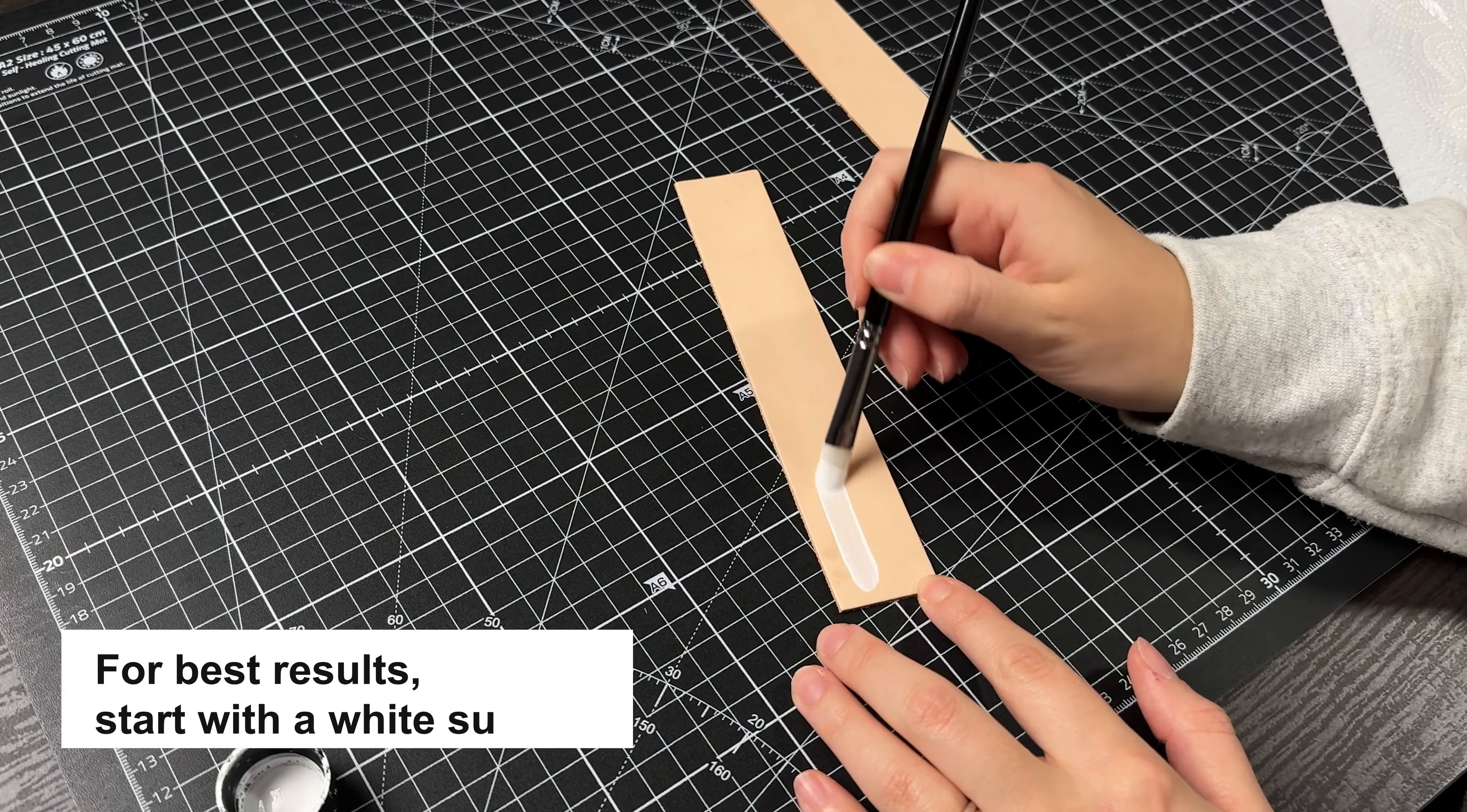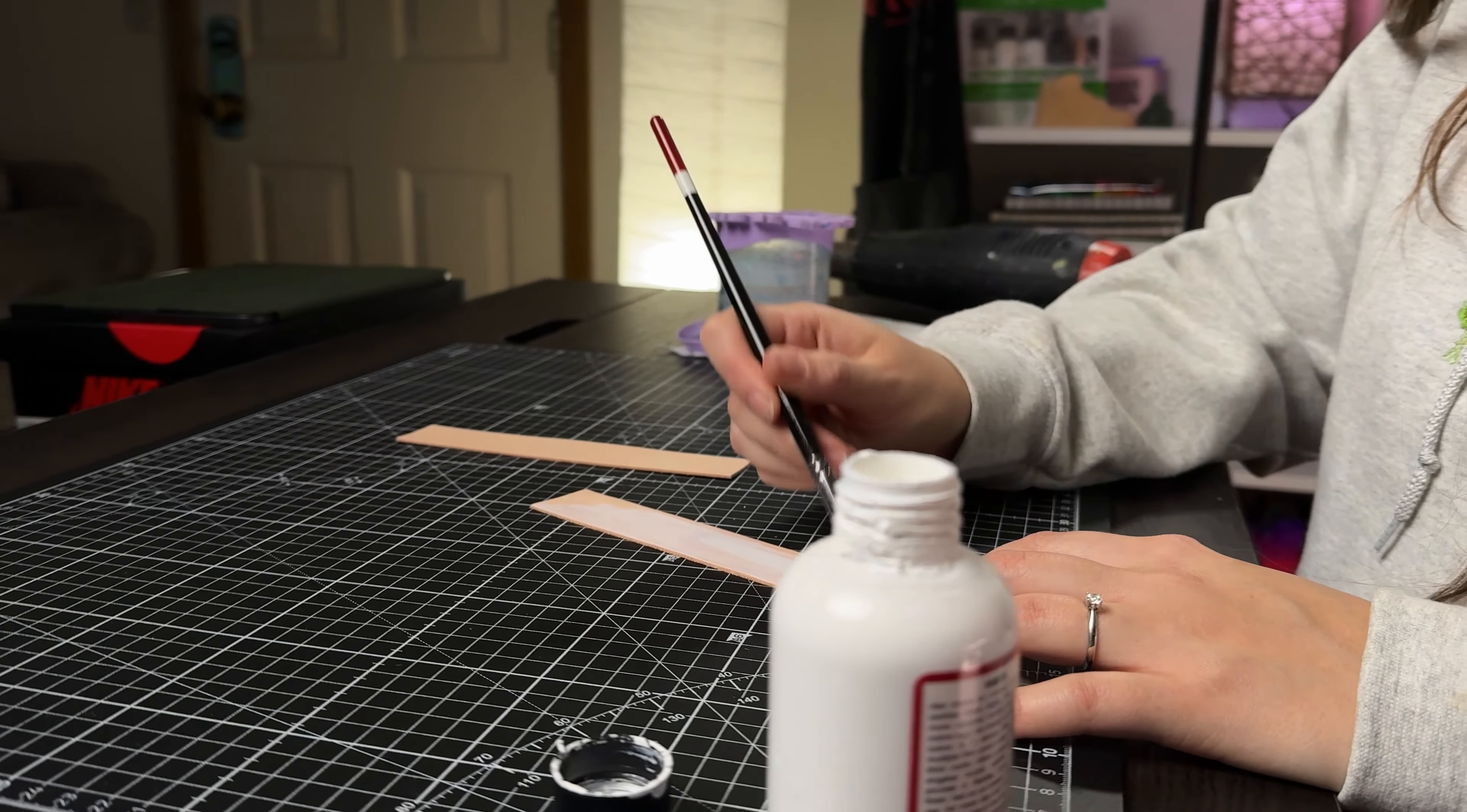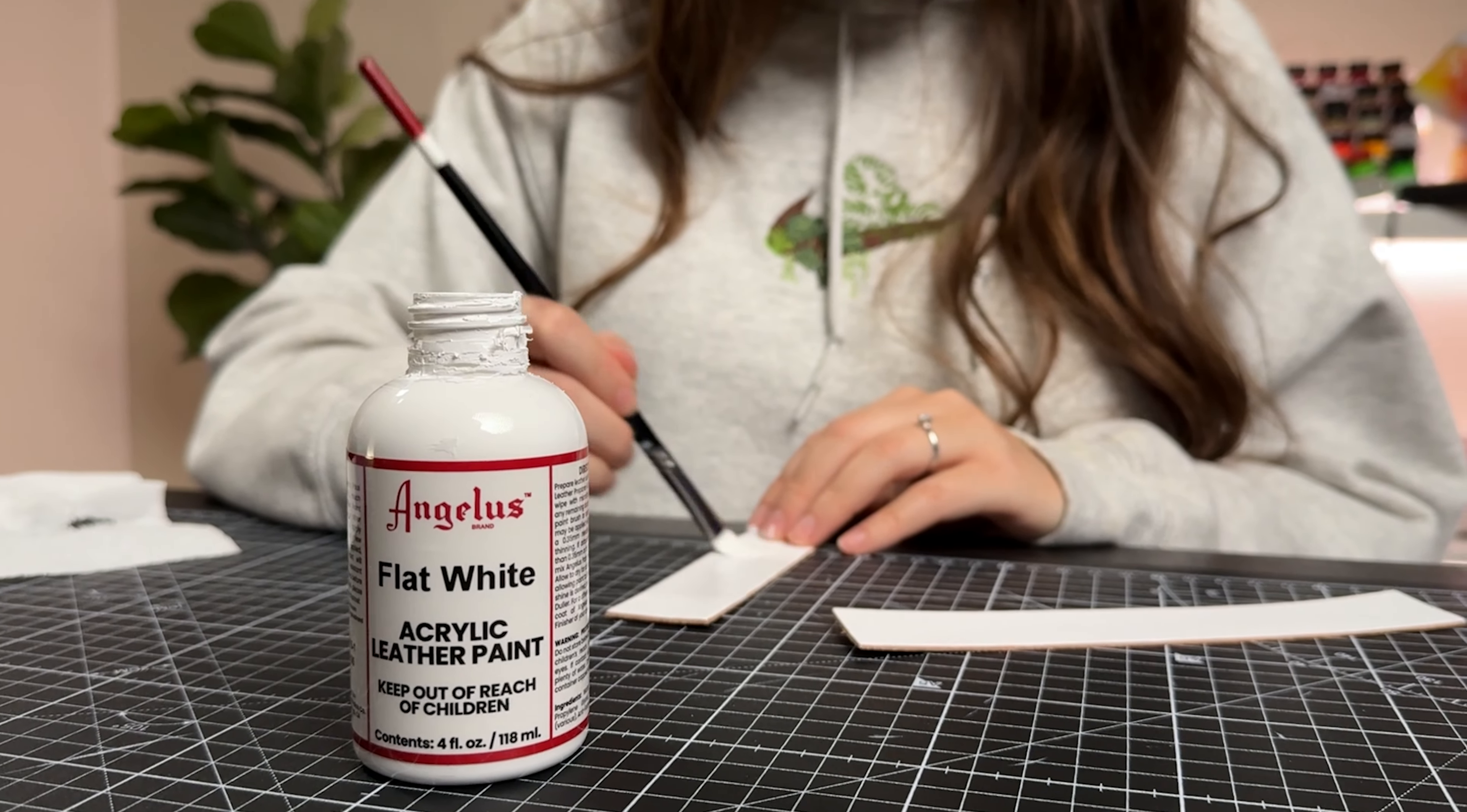So let's try both and compare the results. First, I'm going to paint a few layers of white on this leather swatch since that would be the best base color to use underneath this green glow paint. So if the material you're customizing is already white, then you can skip this step.